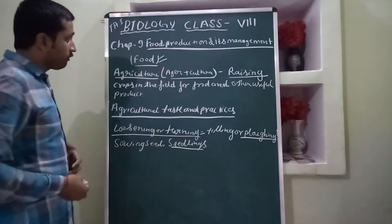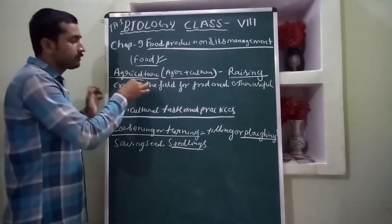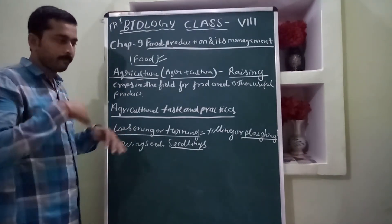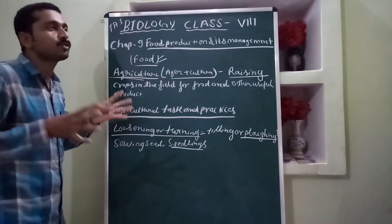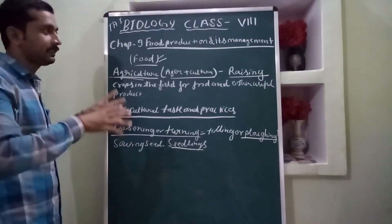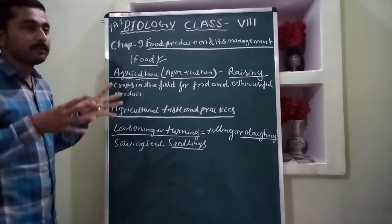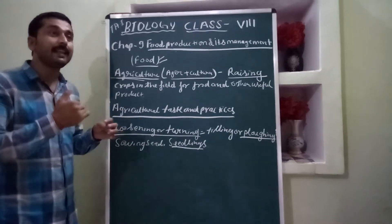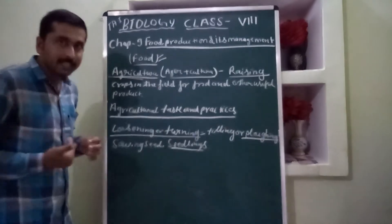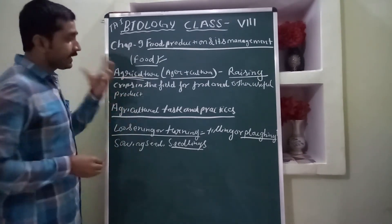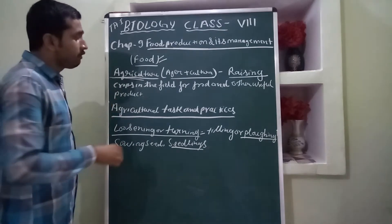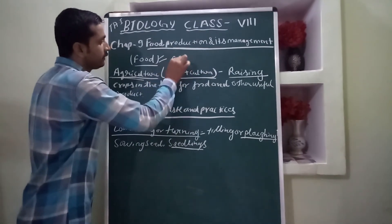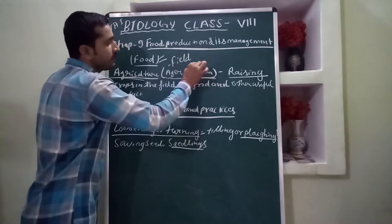Now we start with our first term: agriculture. Most of you know about agriculture because most of our residences belong to agricultural places. In India, about 70 to 71% of the population depends on agriculture and agriculture-related industries. The word agriculture comes from the Greek words 'agar' meaning field, and 'culture' meaning production.